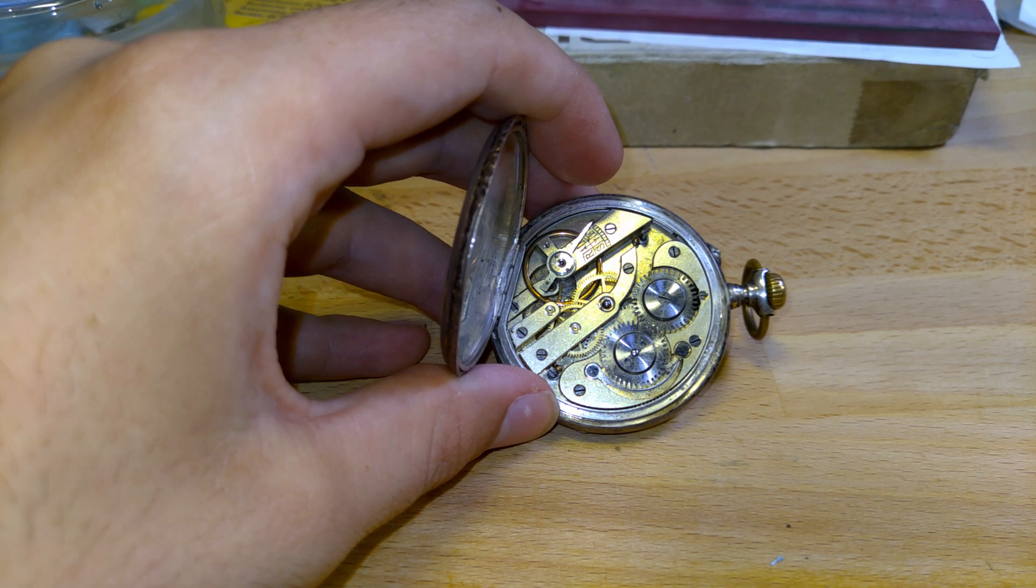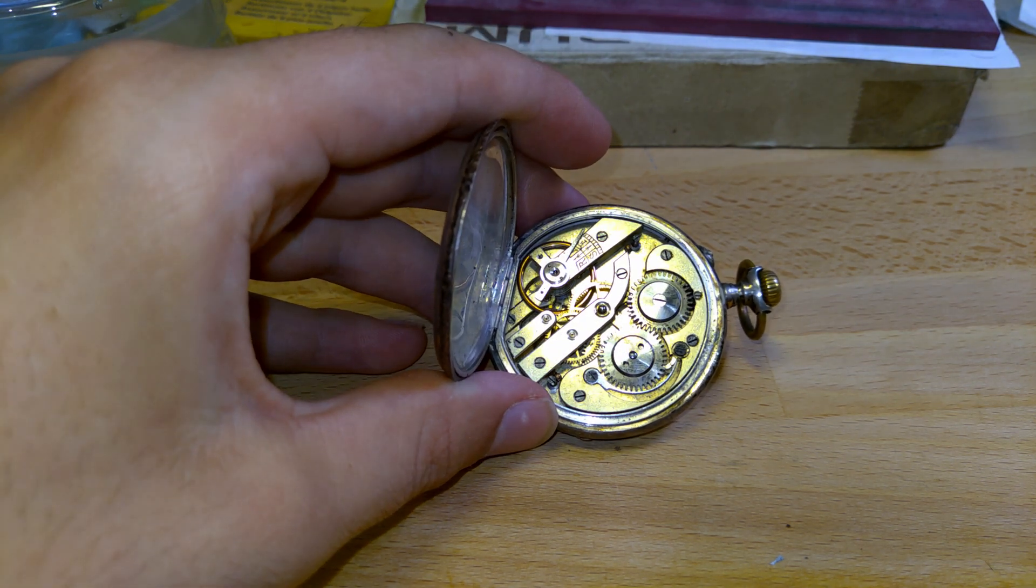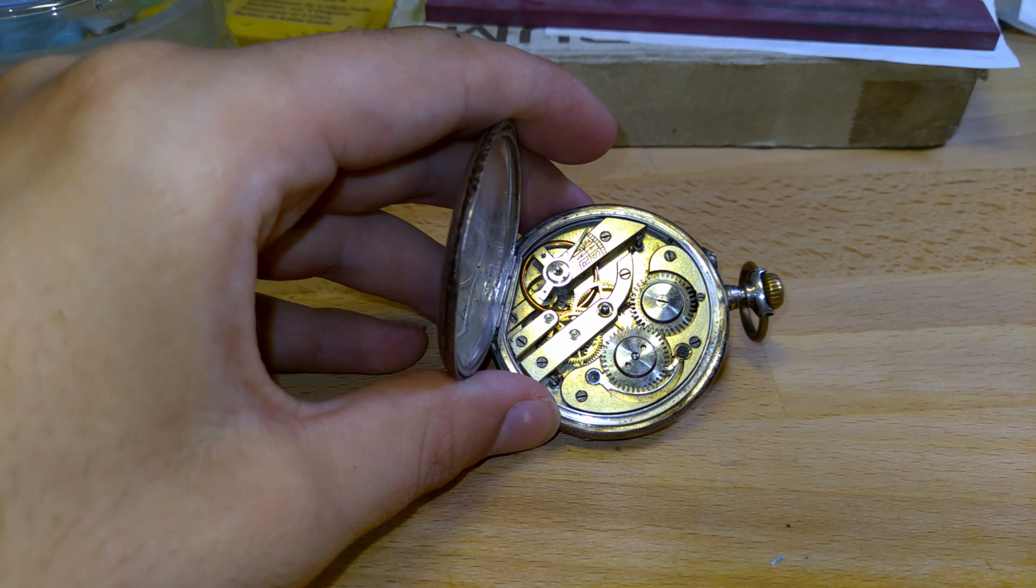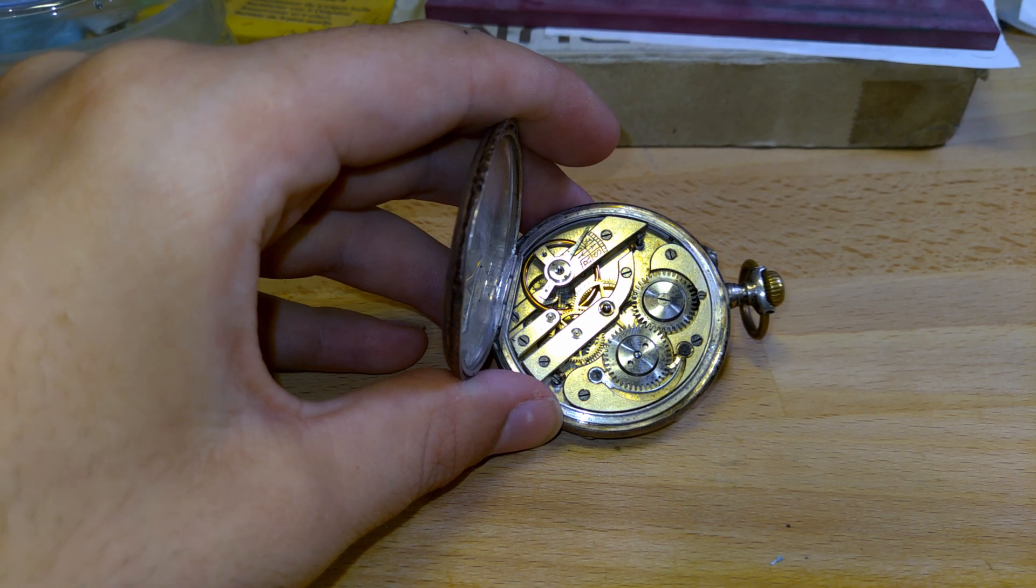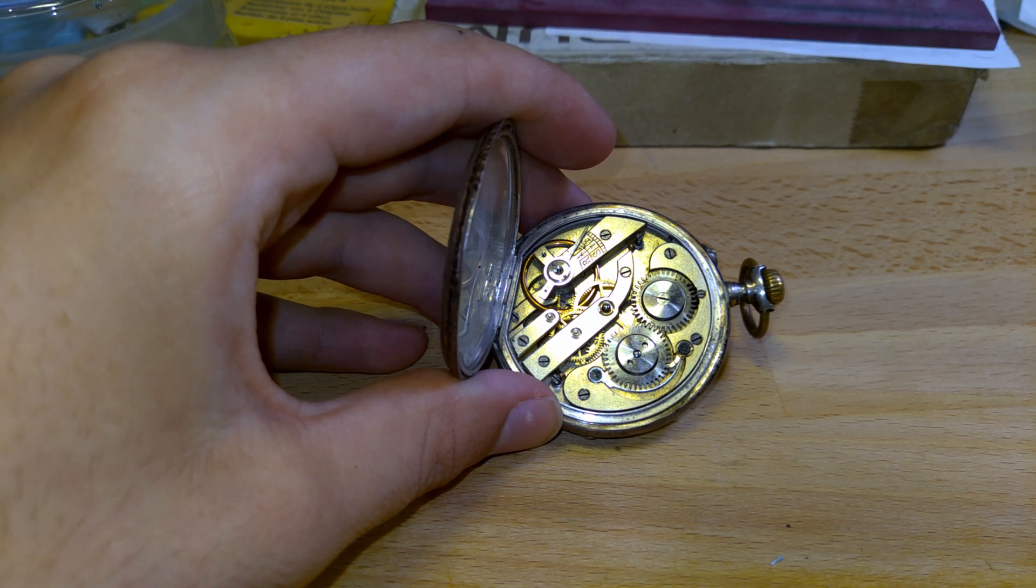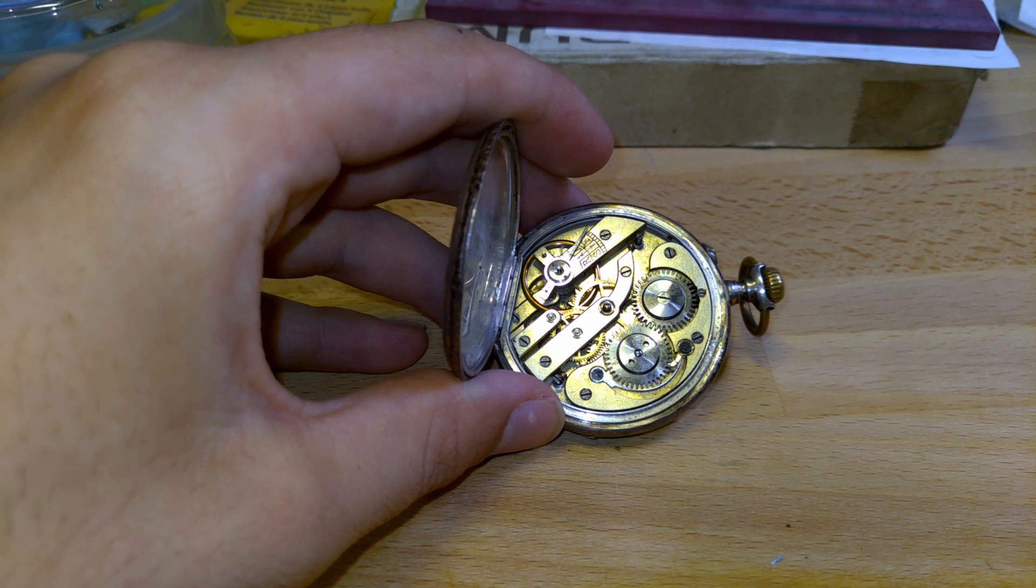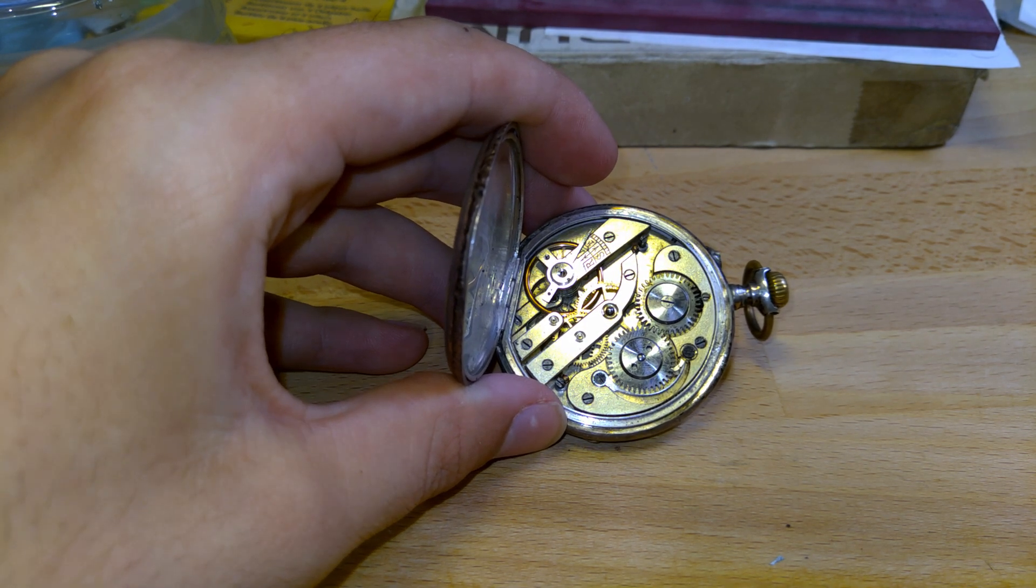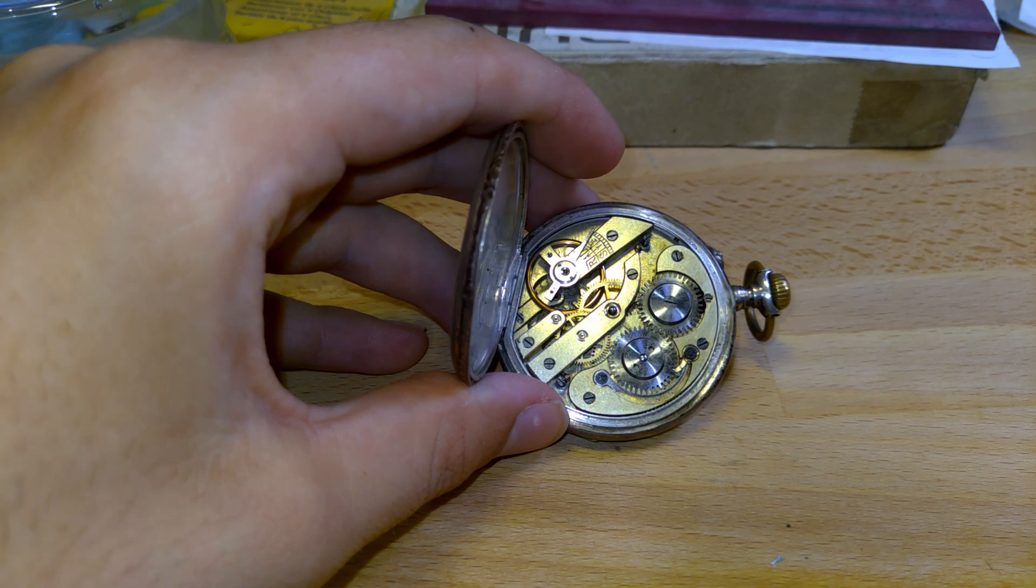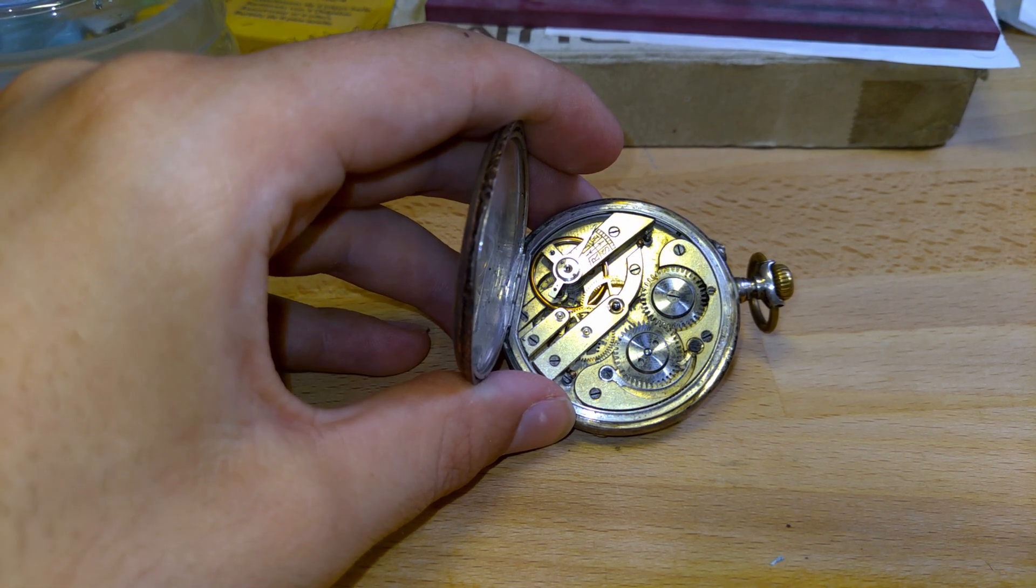Basically they never were really good when they were new, but now when you see a pocket watch like this with a cylinder escapement, it has probably a lot of wear and they are not easy to repair. That's why they are considered as watchmaker's nightmare.